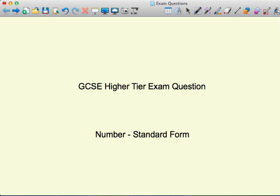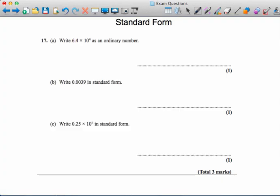Welcome to a GCSE higher tier exam question on standard form. In standard form, a number is written as a number between 1 and 10 multiplied by a power of 10.